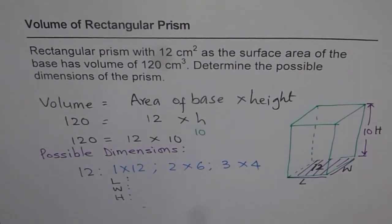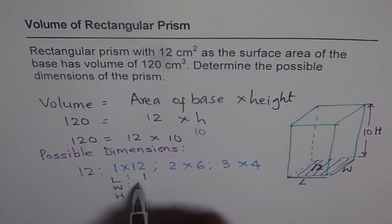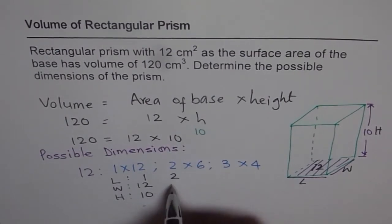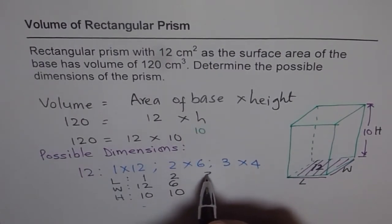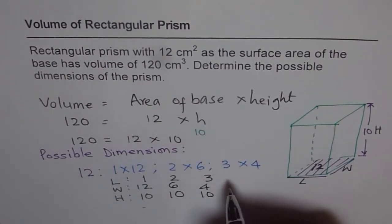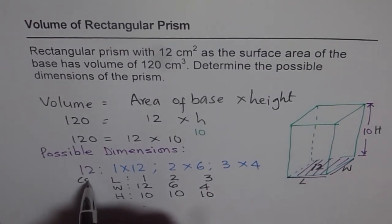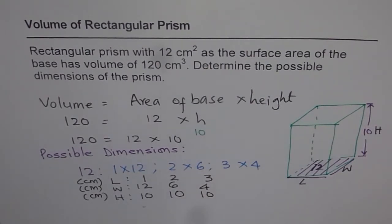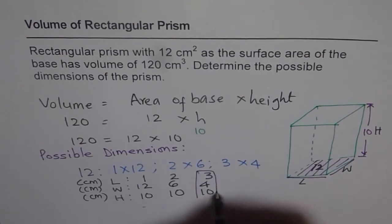So length and width could vary, but height for us is 10. Now you can answer the question. So the possible dimensions are... Let's say we write length, width and height. Can you fill this up? Yes, I think you can. Length is, if the length is 1, then the width has to be 12, and height has to be 10 in all the cases. If the length is 2, width could be 6 in height of 10. And if the length is 3, width could be 4 in height of 10. So these are all our combinations, and units are all in centimeters.